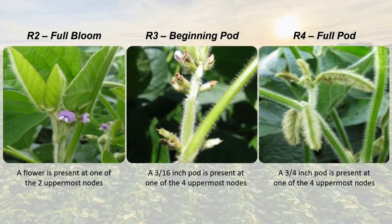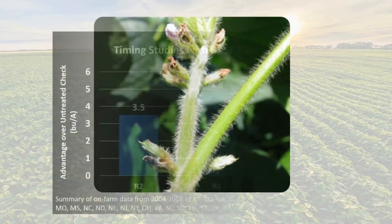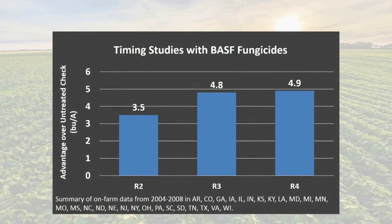Landing somewhere in these growth stages is going to set your fungicides up nicely, but ideally we want to target the R3 growth stage if possible. As you can see by the graph shown here, we've done some pretty extensive studies over several years and found that we should really be targeting either the R3 or R4 growth stages to get the best yield advantage from our fungicide applications. There may be certain circumstances that would warrant an earlier application at R2, such as the early onset of heavy disease pressure or a weather forecast that may make it difficult to make applications at R3, but for the most part, being patient is the best bet.